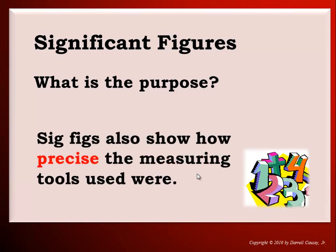Significant figures also show the precision of the measuring device. So you want to record all the significant figures that you can. That way, if you can measure to the hundredths of a unit, then you need to show that. If you can only measure to the tenths of a unit, you need to show that.